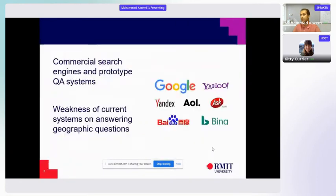As you know, we have several commercial search engines like Google, Microsoft Bing, and so on, and they could answer any type of question and are widely used in daily life. But the main weakness of these systems is they cannot answer or they have shown poor performance for answering geographical questions.